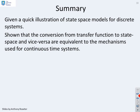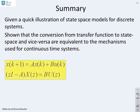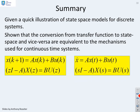In summary, we have given a quick illustration of state-space models for discrete systems, and shown that the conversion from transfer function to state space and vice versa are equivalent to the mechanisms used for continuous time systems. The key equivalence is that replacing s by Z in all expressions — in the state equations, the output equation, and the transfer function formula — gives the discrete-time counterpart.